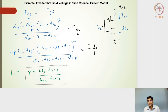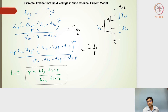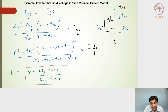Moving to the short channel current model: for PMOS and NMOS, we have two models — long channel and short channel. The short channel model accounts for mobility degradation and velocity saturation, but does not accommodate the channel length modulation index or the drain-to-body depletion region effect. Even with the short channel model, equating the saturation currents of NMOS and PMOS allows us to find the inverter's threshold voltage.